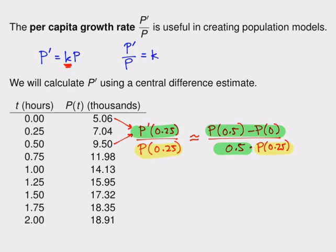So if you do the calculations, you can find that this comes out to approximately 8.88 over 7.04, which is approximately 1.26. And that's our per capita growth rate at time 0.25. And it's saying something about how the bacteria are growing when there are about 7,000 bacteria, which is how many there are at time 0.25.